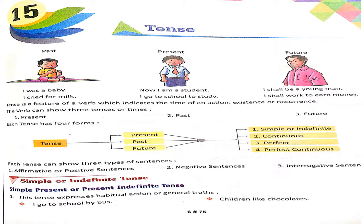As you can see on the screen, we have three tenses. Past, present, and future. Past is what has already gone. Present is what is happening at this time. Future is what will happen in the coming time. For example: 'I was a baby' and 'I cried' — these are past tense. For present we have a present example, and 'I shall work' — meaning I will work to earn money — that is future tense.